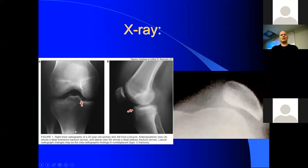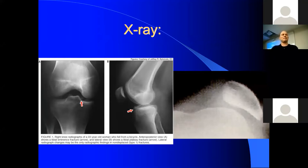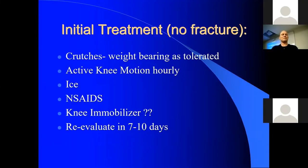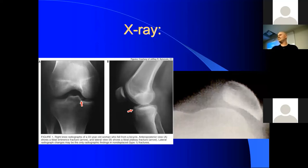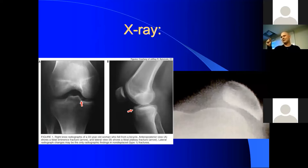On x-ray you can pick up a fracture; with ACLs sometimes you get a fracture at the tibial eminence where the ligament attaches rather than a ligament tear. A patellar subluxation or dislocation is usually obvious clinically — by the time they get to you it's usually been reduced. A Segond fracture is a small avulsion fracture visible off the lateral joint line of the knee and is pathognomonic for an ACL tear. If you see that small fragment — typically a centimeter or less near the lateral joint line on a board question — the answer is ACL tear.